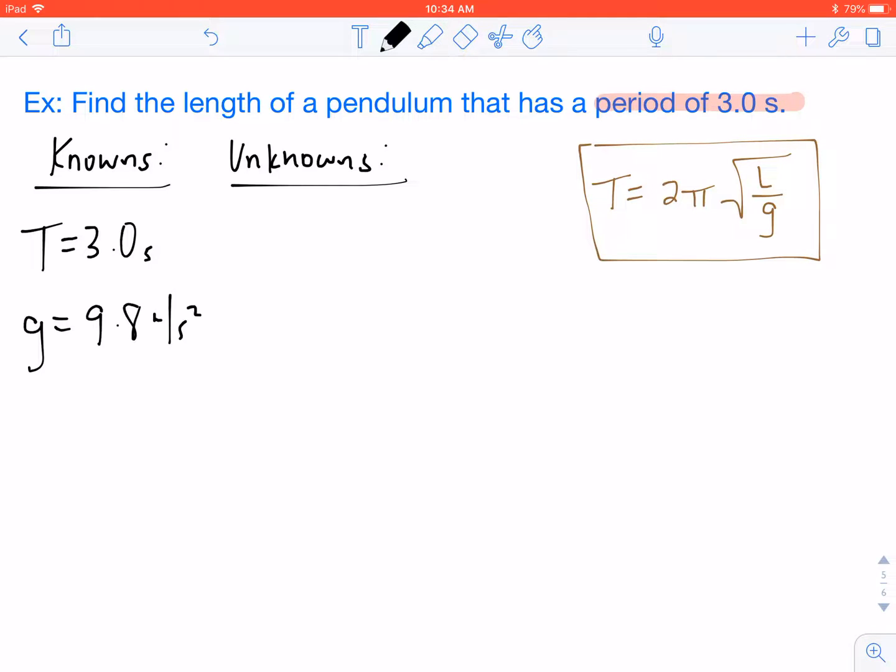So even though it wasn't in the problem, we know that value. So that's one thing to look out for in case you are working on a problem like this. They don't always give you gravity. So our unknown value says find the length. So we know that we are solving for our L value.